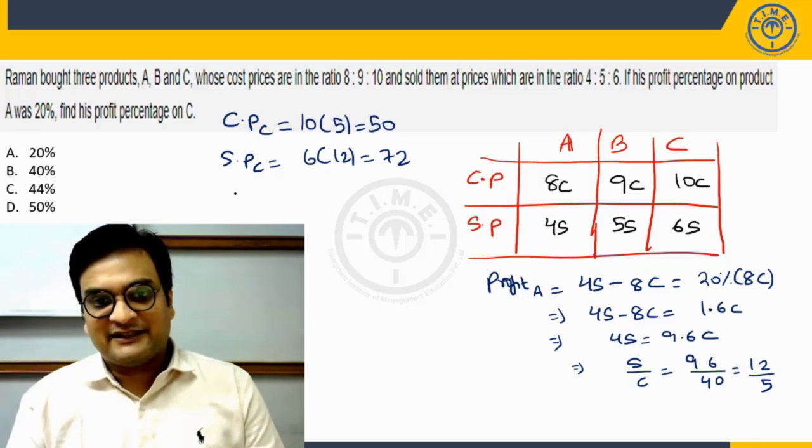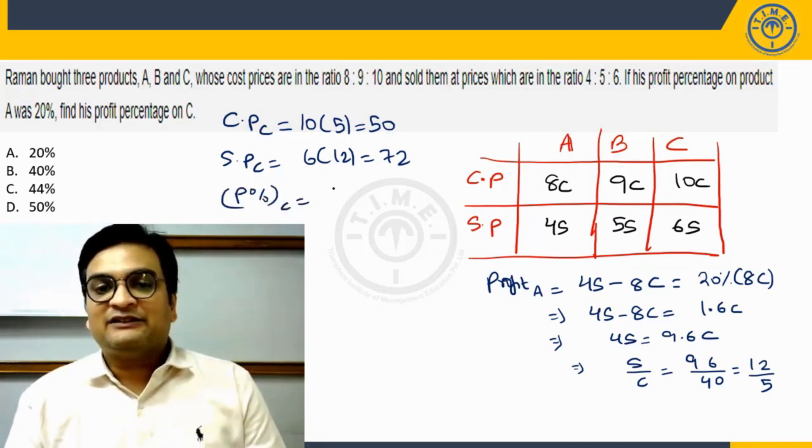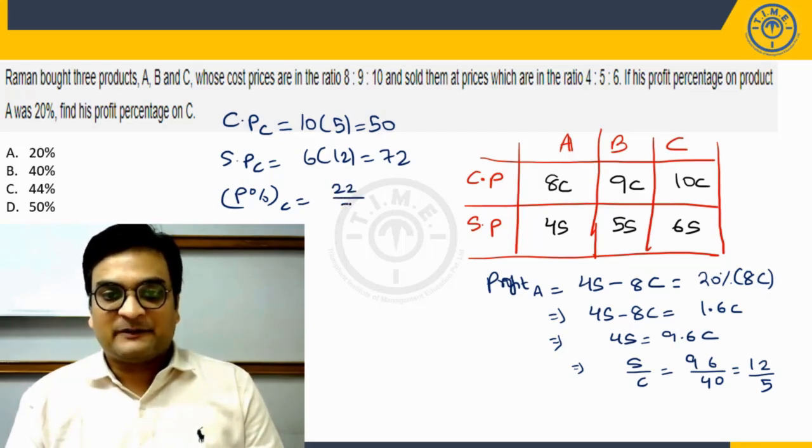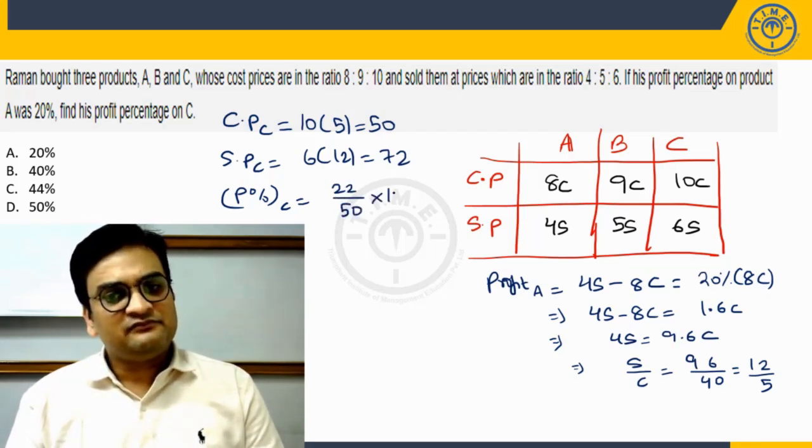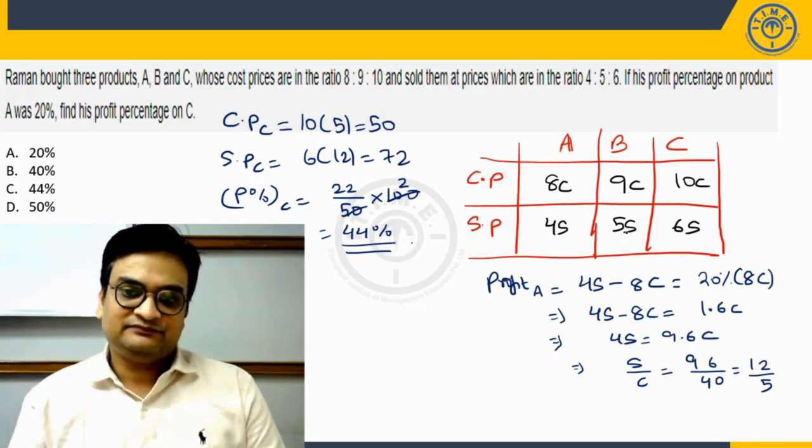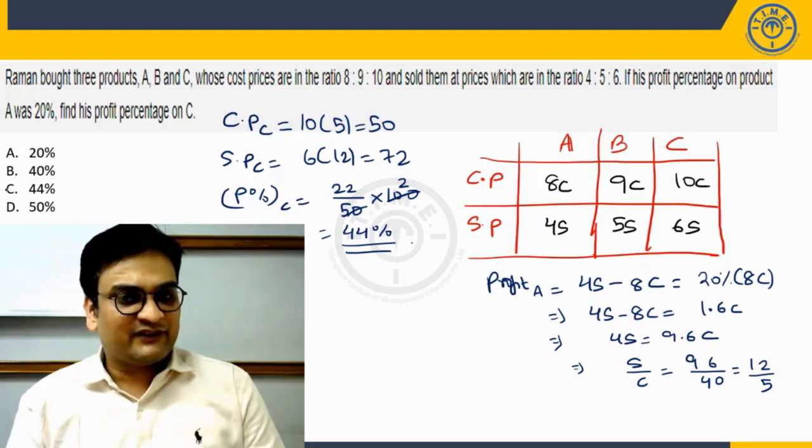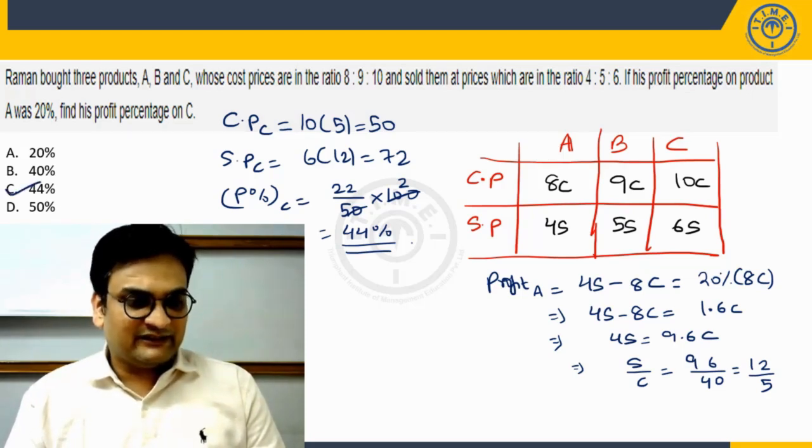Clearly once you know selling price and cost price we can calculate the profit percentage of C as the profit which is 22 on cost price which is 50 into 100. When you simplify this, you should get your answer as 44%, which is option choice C is going to be our correct answer.